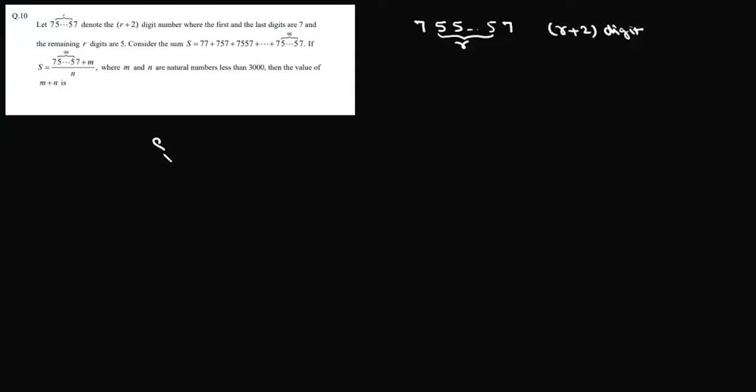So consider the sum s which is 77 plus 757 plus 7557 and goes all the way up to 755557 and here we are taking them 98 times. So basically it is a 100 digit number that says we have to express this sum as 7 and then 99 times 5, 7 plus m by n where m and n are natural numbers less than 3000 and the value of m plus n.